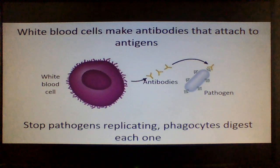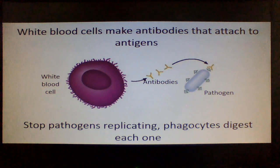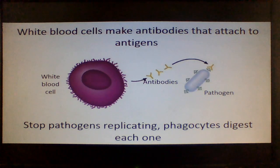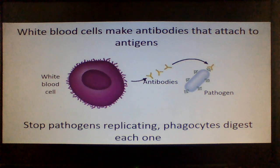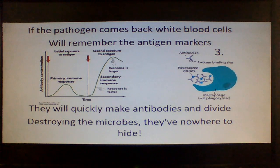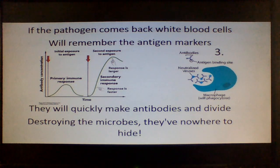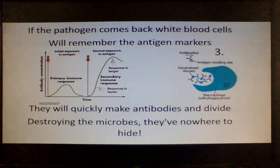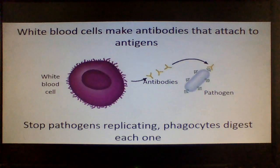White blood cells make antibodies that attach to antigens, stop pathogens replicating, phagocytes digest each one. If the pathogen comes back, white blood cells will remember the antigen markers — they will quickly make antibodies and divide, destroying the microbes. They've nowhere to hide, destroying the microbes, they've nowhere to hide.